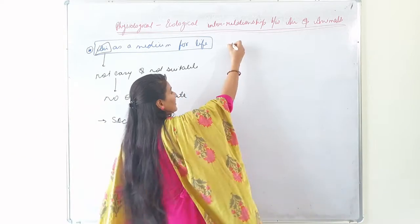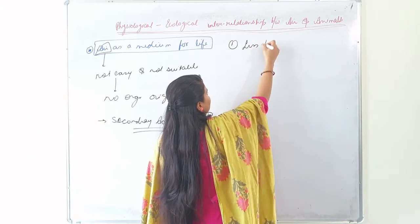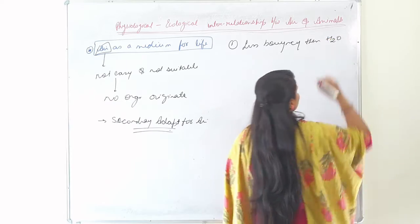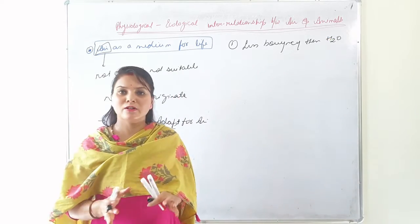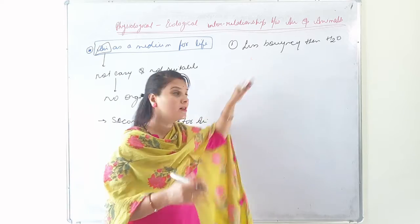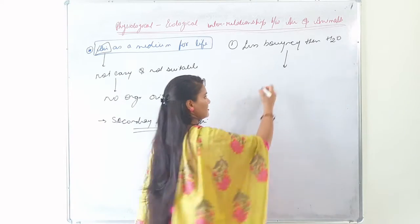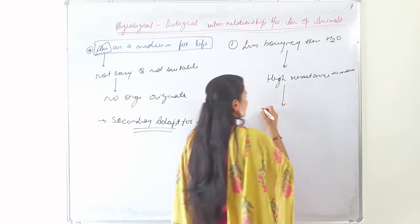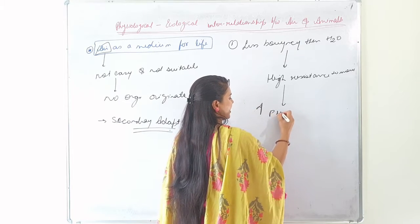Why is air not easy and suitable for existence of life? Because air has less buoyancy than water, so whenever the aquatic or terrestrial animal is subjected to air, it faces high resistance to move due to the high pull of gravity.